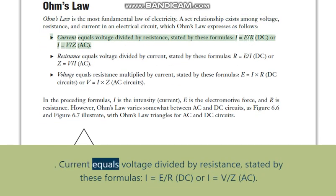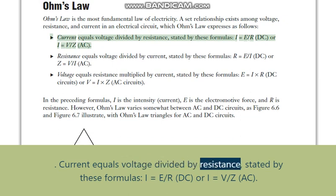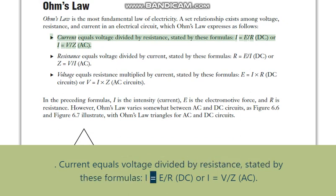Current equals voltage divided by resistance, stated by these formulas: I equals E slash R for DC, or I equals V slash Z for AC.